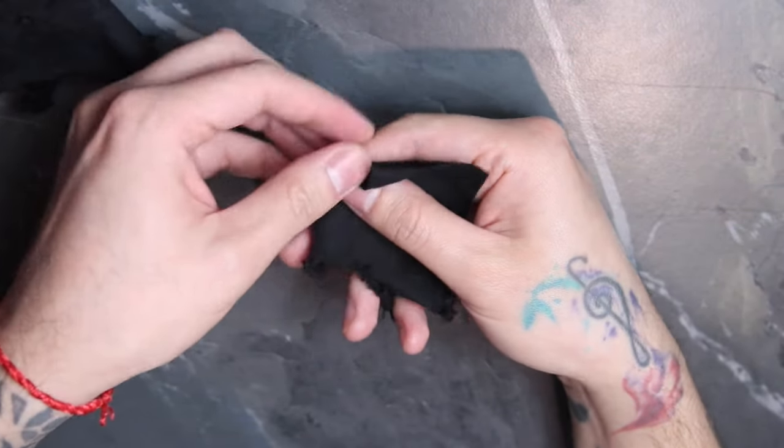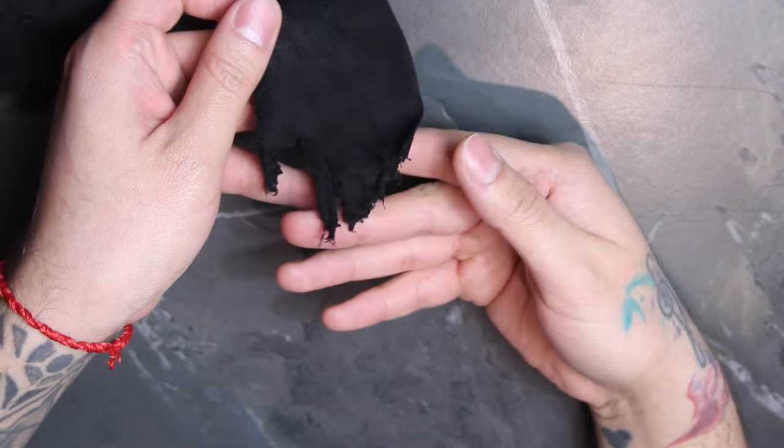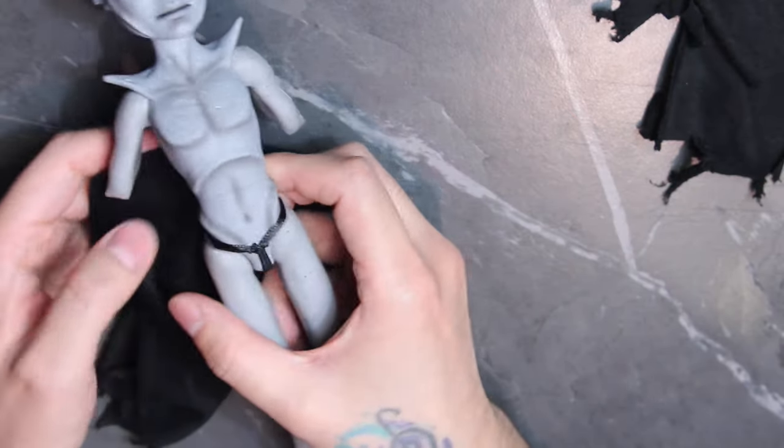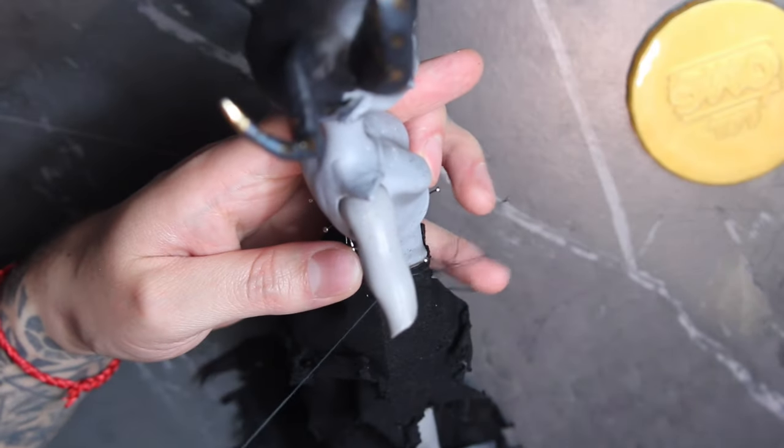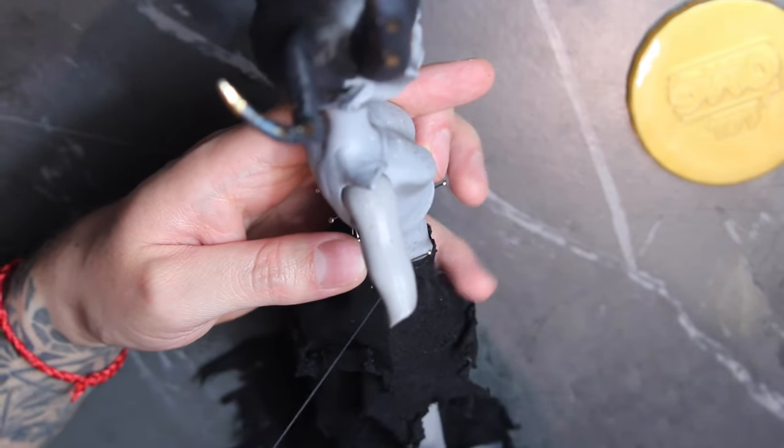Now time for the outfit. I cut some pieces of fake suede for a skirt and distressed them. Later added a piece of ribbon around his hips and some elastic on the crotch to avoid the skirt from pulling up. And I'm sewing the suede pieces on the ribbon.